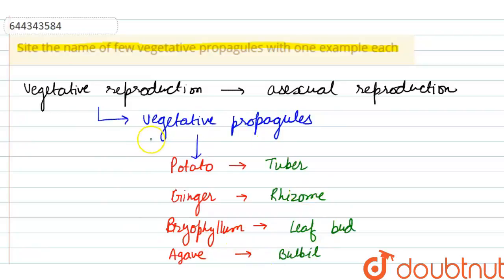So these are the few examples of vegetative propagules along with their name. Thank you.